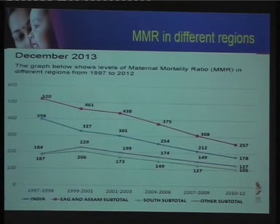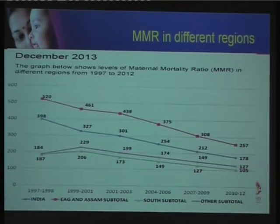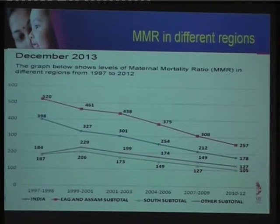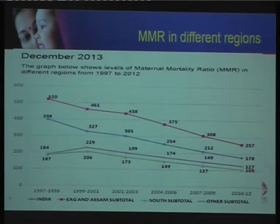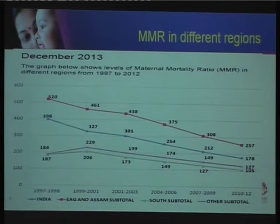Some would say the decline in maternal mortality has been uneven, inequitable, and perhaps unsatisfactory. In some of our northern states — particularly the EAG states — MMR is still very high at 257. It's only in the southern states where the maternal mortality rate has really gone down. India is such a diverse country, with not only social and cultural differences but also diverse healthcare indices across the country.